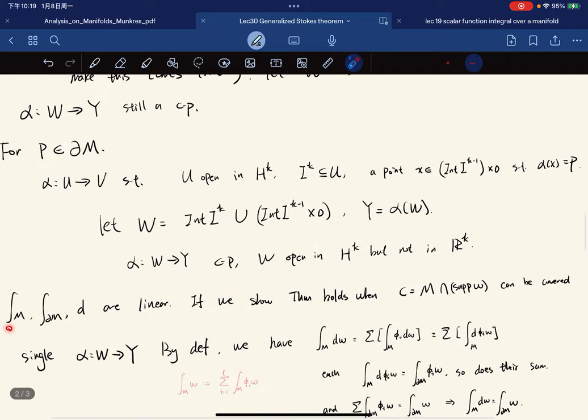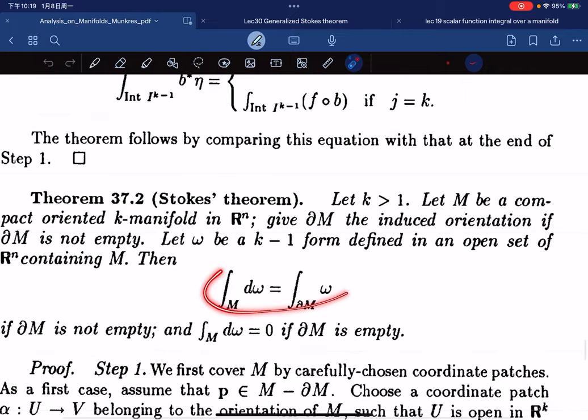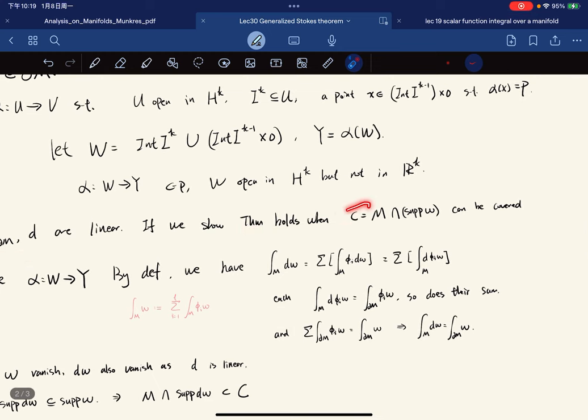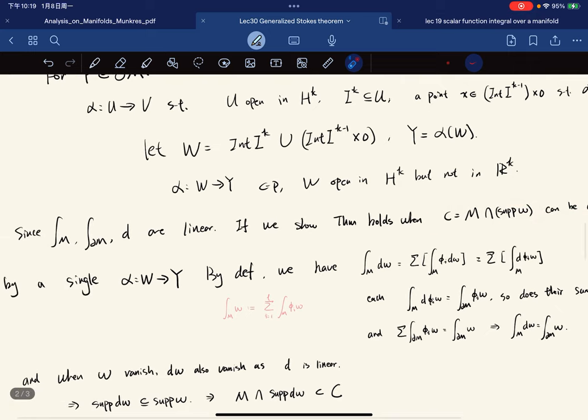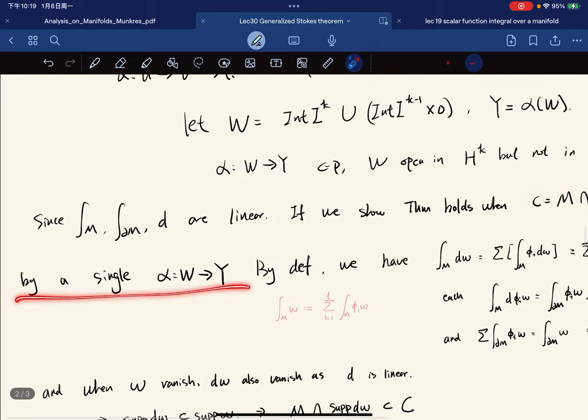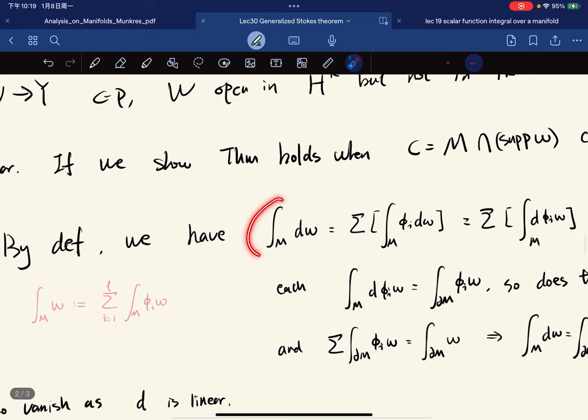Because we know these three operations are linear. So this is our statement that involves this integral, this integral, and also this differential operator. Now, this is linear, so if we show the theorem holds if this set C can be covered by a single coordinate patch, then by definition, we have this is equal to this, and this is going to be equal to this, because d is linear.